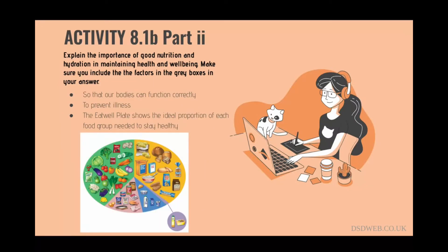Part 2 of Activity 8.1b asks you to explain the importance of nutrition and hydration in maintaining health and wellbeing. To function properly, our bodies need fluids and the right balance of nutrients. Deficiencies can lead to illness. The Eat Well Guide can be used to understand the correct proportions of each type of food we should be eating.